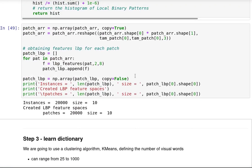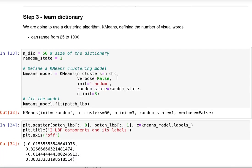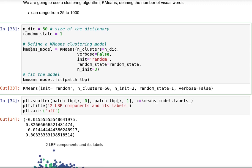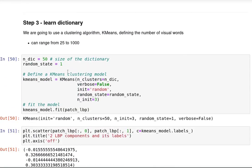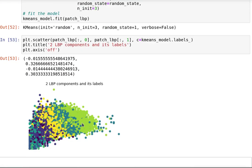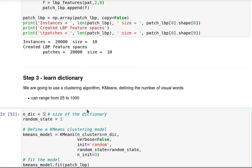We're going to learn the dictionary as the third step. We use the clustering algorithm k-means, defining the number of visual words to be 50, but we can use other sizes. In the literature, we can find the size of the dictionary ranging from 25 to even 1000 or more. For visualization, I'm going to show the two first components of LBP and its labels. We can see those are organized spatially.